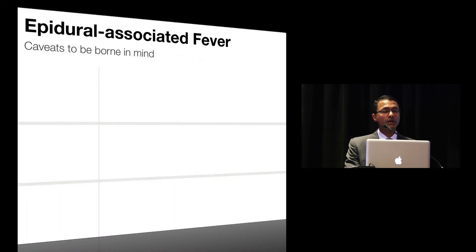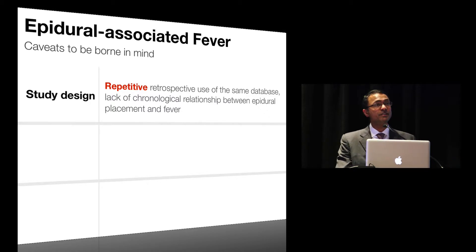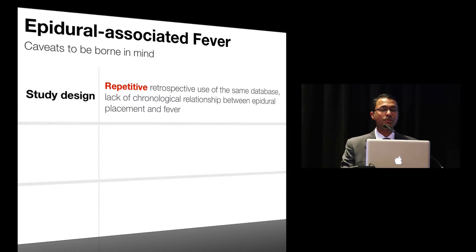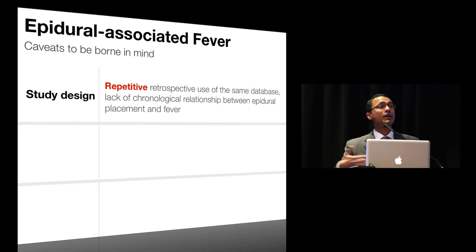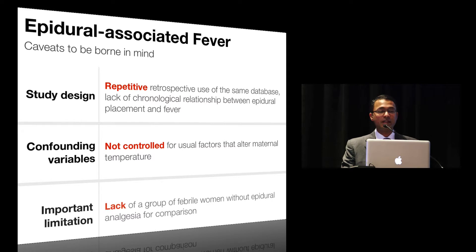Some caveats to bear in mind: the study is a repetitive retrospective use of the same database, with this group having published more than three studies using the same database, and no correction for multiple testing. There's a lack of chronological relationship between epidural placement and fever — we're not entirely sure about the time course. The study is not controlled for usual confounding variables such as the number of cervical exams and use of prostaglandins. Most importantly, there's a lack of a group of febrile women without epidural analgesia for comparison.